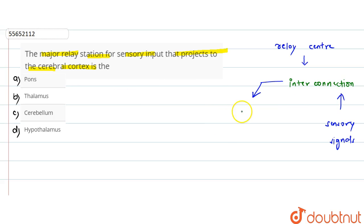And after that, this will be sent to the cerebral cortex which will be processed. So this is the interconnection. We call it thalamus.